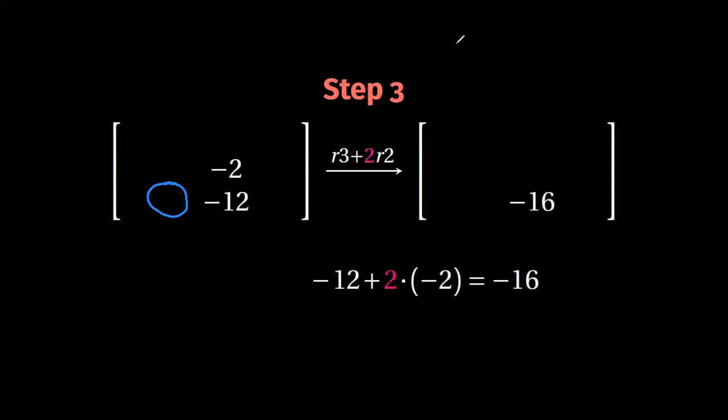Then we go on with the other elements of the two rows, minus 12 plus two times minus two, which is equal to minus 16. And finally, minus four plus two times two, which is equal to zero.